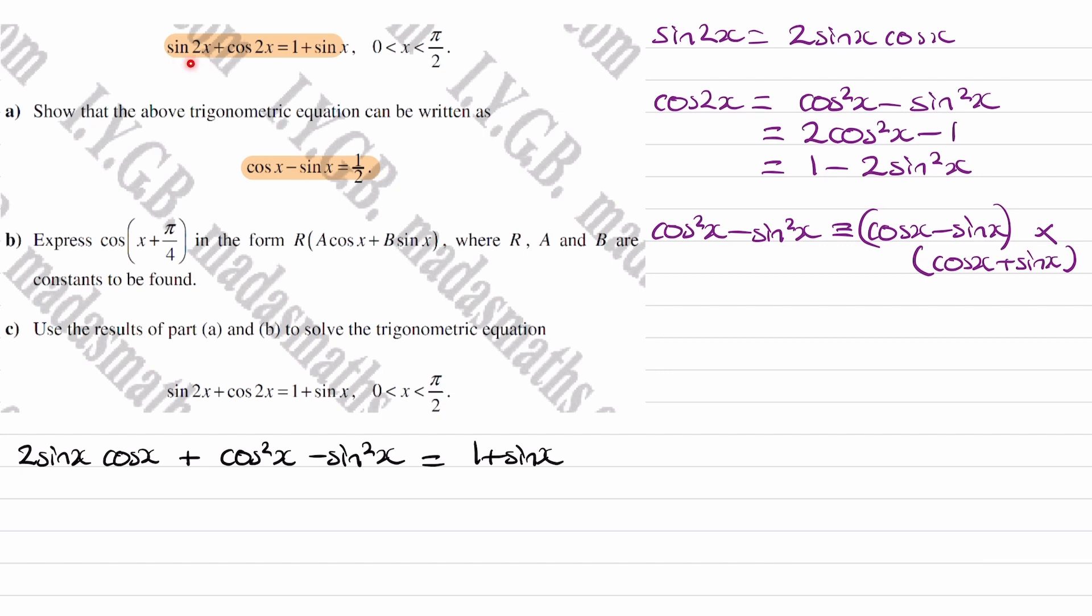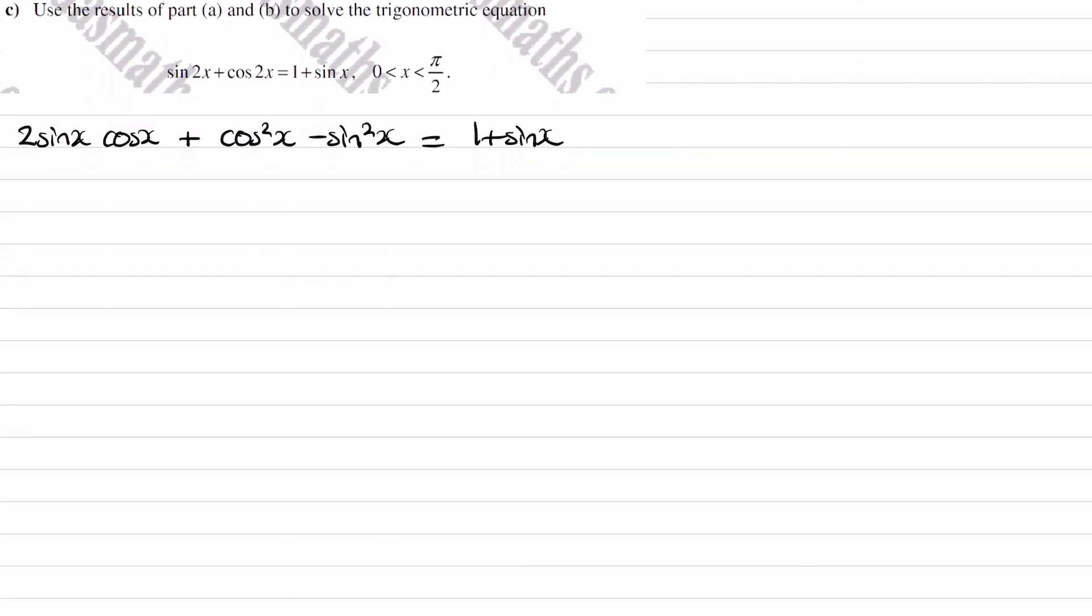Just changing the sin 2x into this, changing the cos 2x into this. Now I'll bring everything to the left side. So 2 sin x cos x minus 1 minus sin x, that's just bringing what we have on the right to the left. And I'll change the cos squared x minus sin squared x into cos x minus sin x times cos x plus sin x.